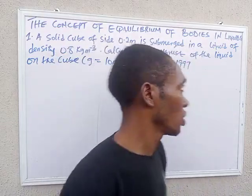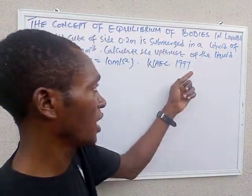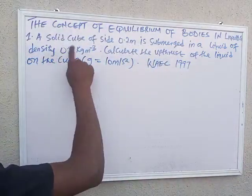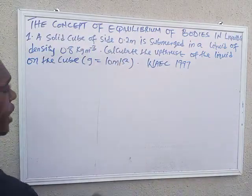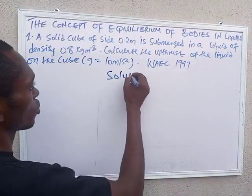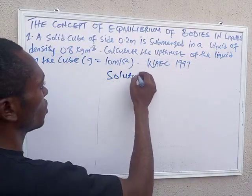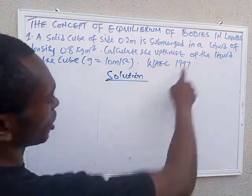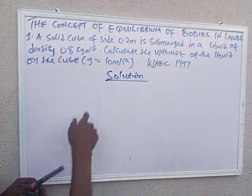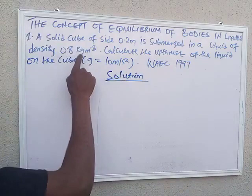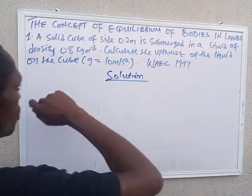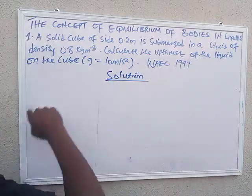We have this question on the board, which is a WAEC question from 1997. The question says: a solid cube of side 0.2 meters is submerged in a liquid of density 0.8 kilograms per meter cubed. We are asked to calculate the upthrust of the liquid on the cube.